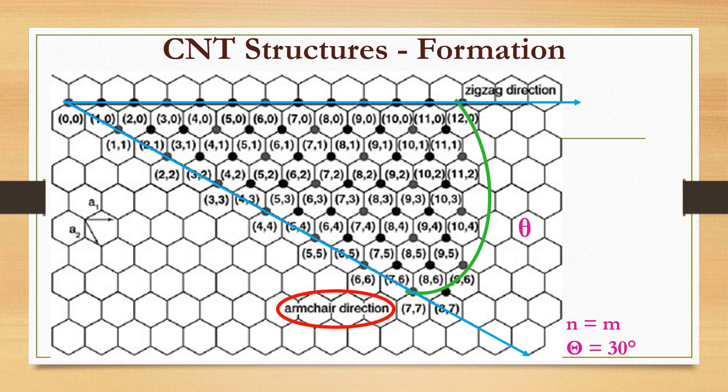Three structures of single wall nanotubes are revealed. When M equals N, the nanotube is called armchair type with theta equal to 30 degrees. When M equals 0, it is zigzag type with theta equal to 0 degrees. Otherwise, N not equal to M, it is a chiral tube with theta between 0 and 30 degrees.